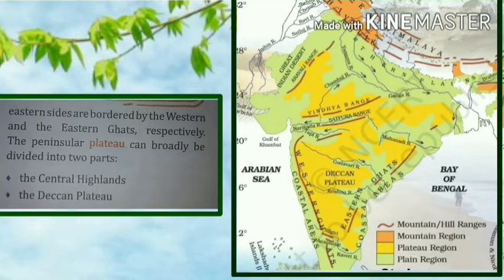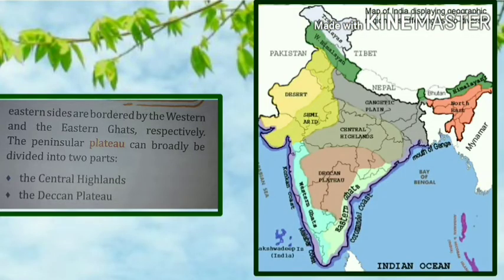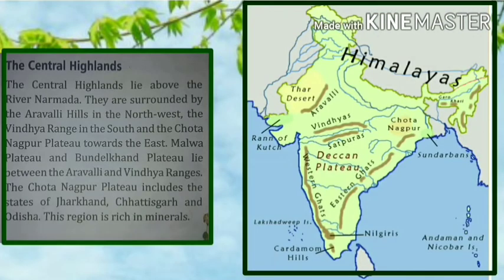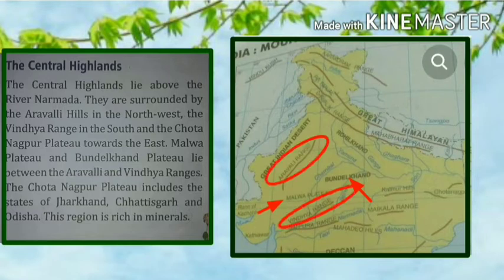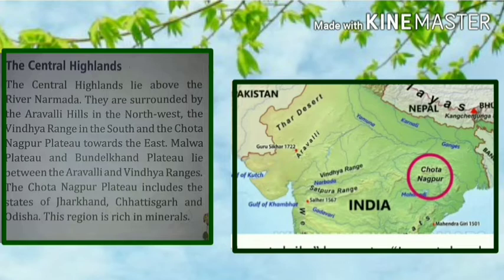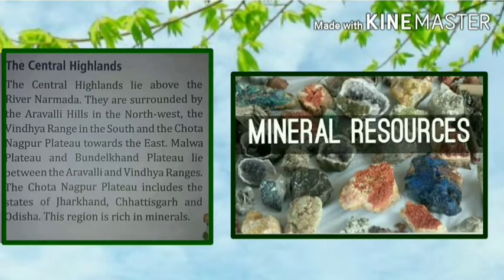The peninsular plateau can broadly be divided into two parts: the Central Highlands and the Deccan Plateau. The Central Highlands lie above the Narmada River and are surrounded by the Aravalli Hills in the northwest, the Vindhya Range in the south, and the Chotanagpur Plateau to the east. The Malwa Plateau and Bundelkhand Plateau lie between the Aravalli and Vindhya ranges.